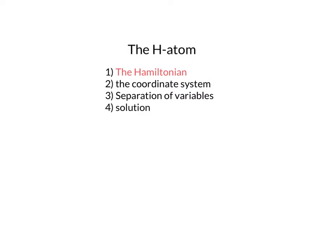We're going to go through the solution to the hydrogen atom and do it in four parts. First of all, we're going to talk about the Hamiltonian. What is the actual differential equation that we need to solve? Then look at the coordinate system that we want to use. Because this is a three-dimensional problem, we're going to have to separate the variables and then finally think about what the solutions to that problem look like.